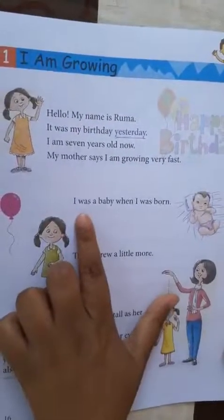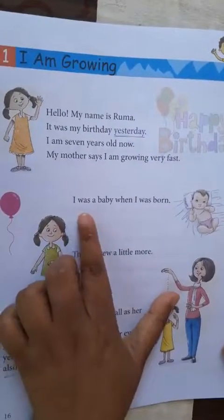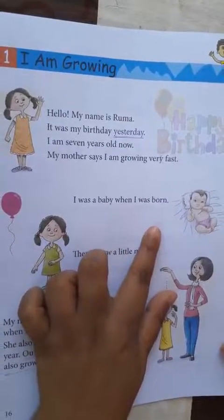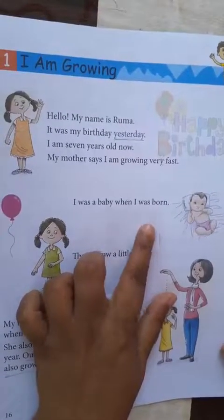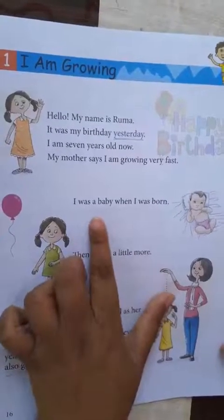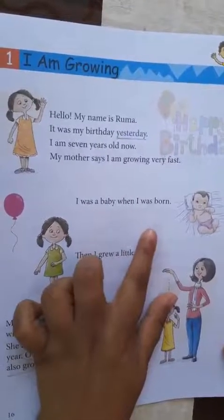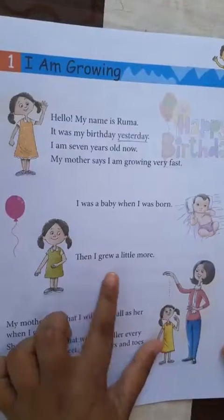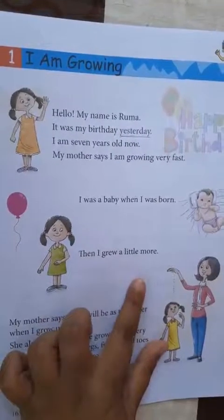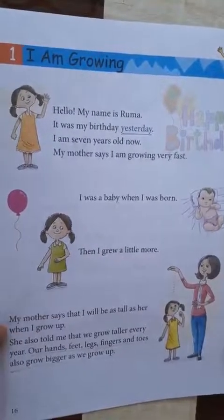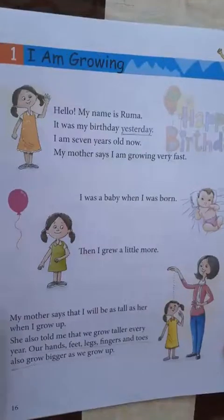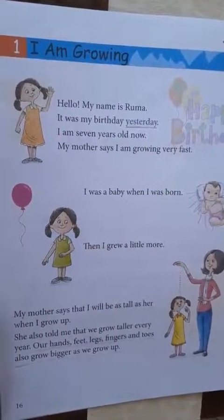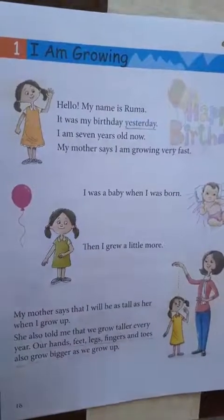Now the second stanza says: I was a baby when I was born. Like you were a baby when you were born, she was also a baby when she was born. Then it says: I grew a little more. As you all are growing each year and every day, likewise she is also growing a little each year and every day.